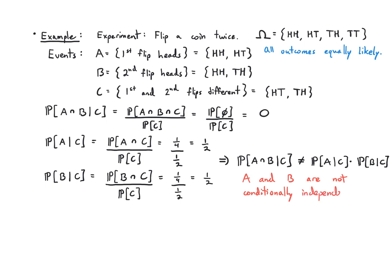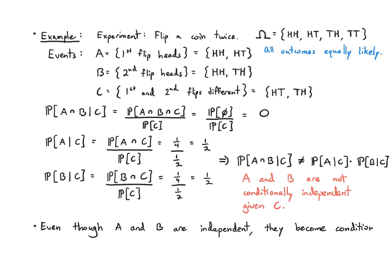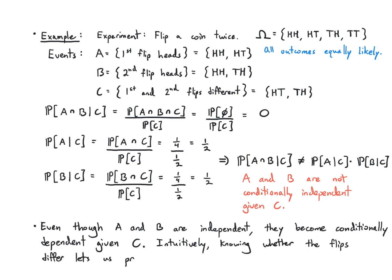What we learn is that even though A and B are independent, they become conditionally dependent once we know C. Intuitively, knowing whether the flips differ lets us predict one flip from the other. If I just tell you the first flip is heads, you can't predict the second. But if I first tell you the flips are different and then tell you the first flip is heads, you know the second flip is tails. A and B become linked through conditioning on C.